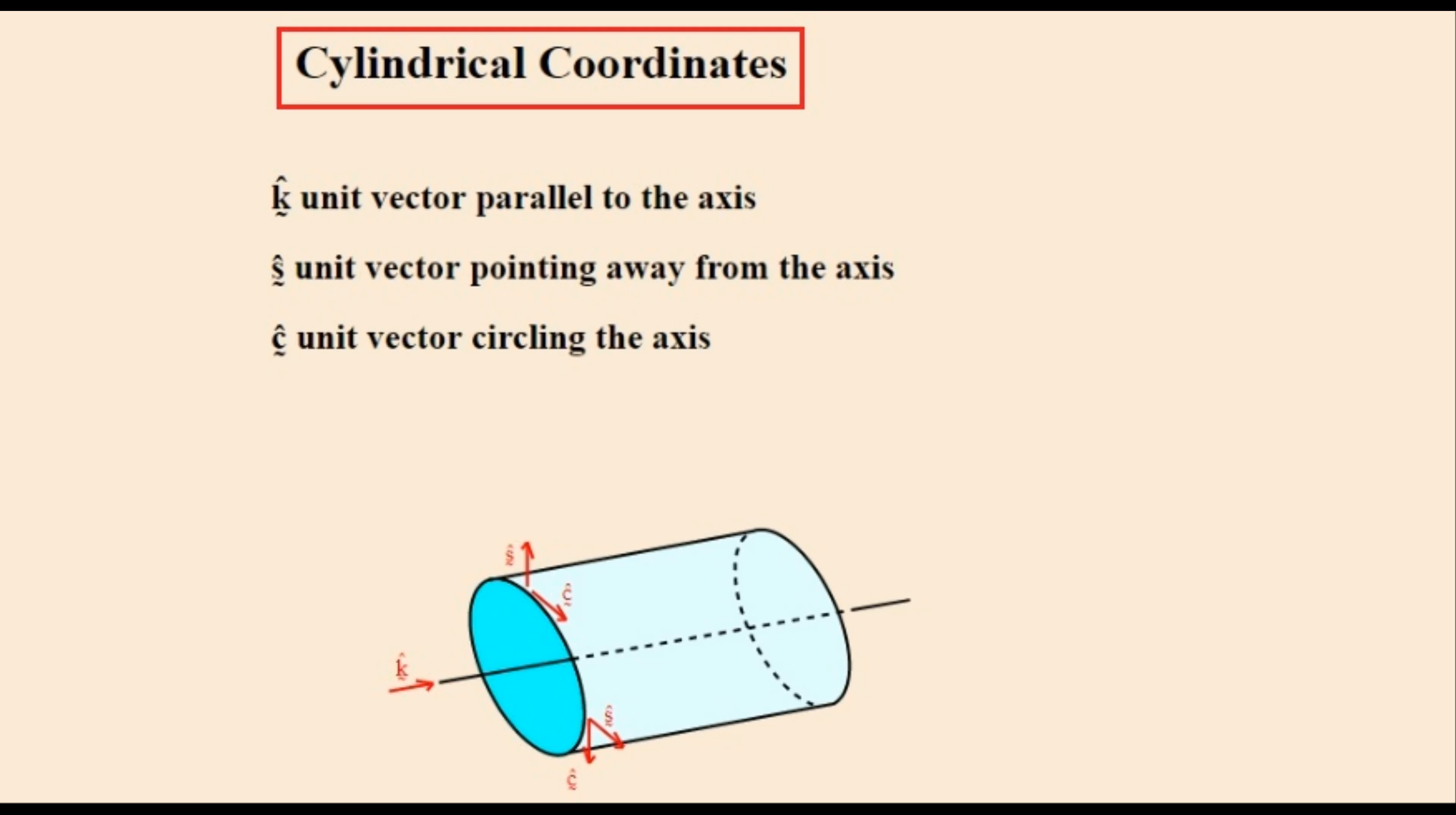Unit S is the vector that faces away from the axis and is the unit normal vector to any cylinder with the axis as shown. It changes with position but can be worked with like I, J and K. Unit C is the circulating vector which always has the direction to rotate around this cylinder.